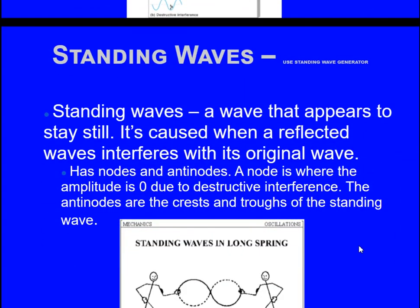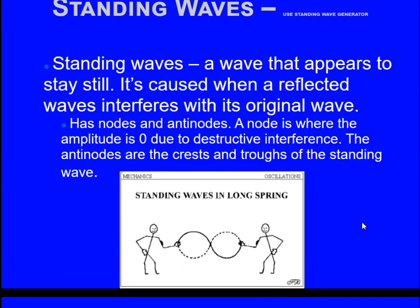Then I have the concept of standing waves. Standing waves, which technically means a wave that appears to stay still, is caused when a reflected wave interferes with its original wave. It has nodes and antinodes. A node is where the amplitude is zero due to destructive interference, and the antinodes are the crests and troughs of the standing waves. We are going to talk about this and much more during this week. Thank you.